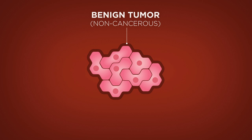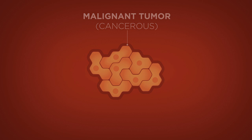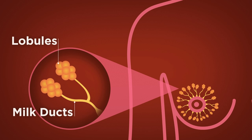These abnormal cells, or group of cells, can progress into the disease known as cancer. Breast cancer usually begins either where the milk is being produced, the lobules, or in the milk ducts.